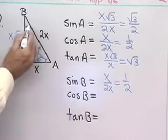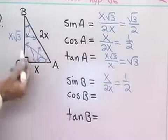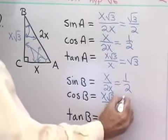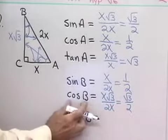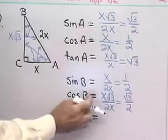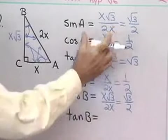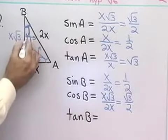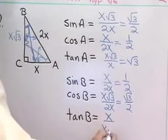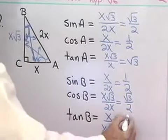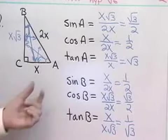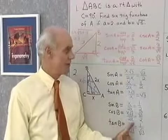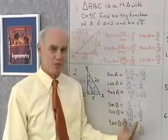Cosine of angle B is the side adjacent divided by the hypotenuse: x square root of 3 divided by 2x. The x's divide out, giving square root of 3 over 2. I notice that cosine of B equals sine of A — because A and B add up to 90 degrees, the cosine of one is the sine of the other. Tangent of angle B is the side opposite divided by the side adjacent: x divided by x square root of 3, which equals 1 over square root of 3. So I've found sine, cosine, and tangent for both acute angles.